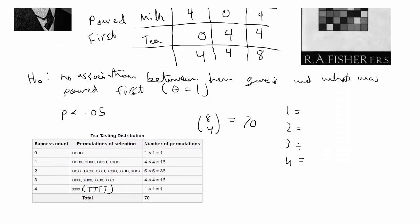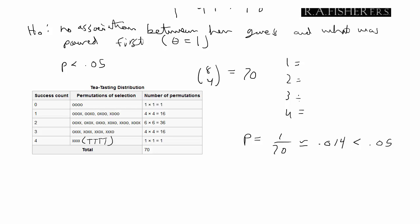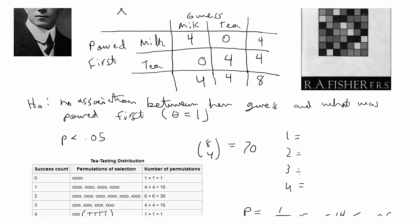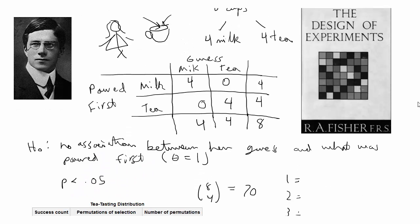If you do that test, the p-value would be 1 over 70, which is approximately equal to 0.014, which is obviously less than 0.05. So according to this p-value and the rules that we had discussed prior to running the test, in that case, you would reject the null hypothesis that there was no association, and you could reject the idea that the woman just randomly was guessing milk or tea.